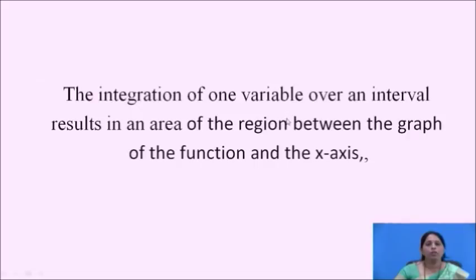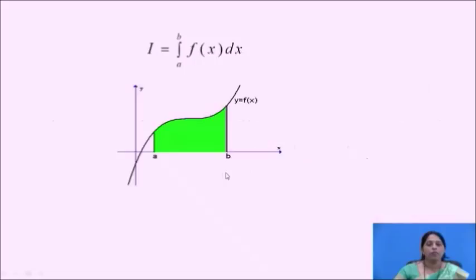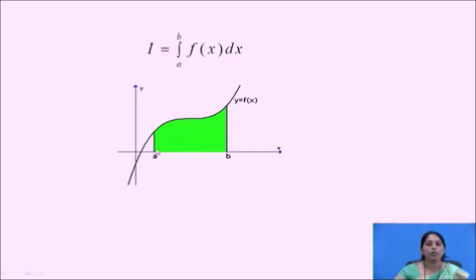The integration of one variable over an interval results in an area of the region between the graph of the function and the x-axis. The given integral is I equals to integration from a to b, f of x dx. The function is a single variable function with the limits of x from a to b. Here in the graph, the lines x equals to a and x equals to b are drawn, which are the limits of integration. The region of integration lies between these two lines. The curve y equals to f of x is shown here. The integral gives the region below this curve and above the x-axis between the limits x equals to a and x equals to b — the shaded region shown here.